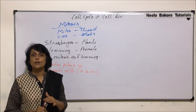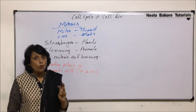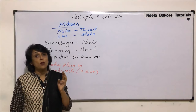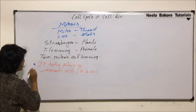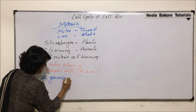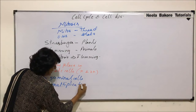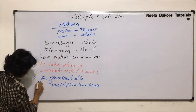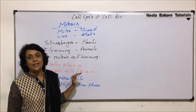If you recall the process of spermatogenesis and oogenesis — that is gametogenesis — there are three steps: the first is the multiplication phase, then the growth phase, and last is the maturation phase. The maturation phase is when meiosis takes place. The multiplication phase is again mitotic division. So mitosis also takes place in germinal cells during the multiplication phase.